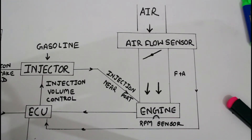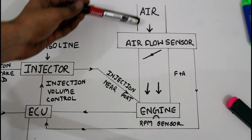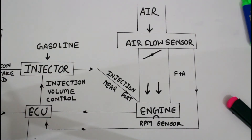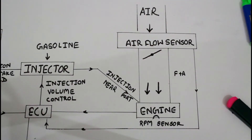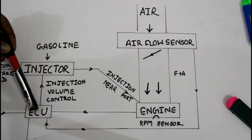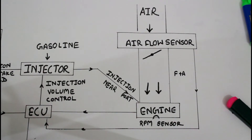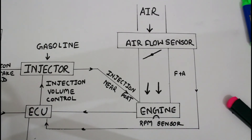This is called air mass metering or air flow metering. As air enters the intake manifold, the air flow sensor measures the amount of air and sends the information to the ECU. Similarly, the speed sensor sends information about the speed of the engine to the ECU. The ECU processes the information received and sends appropriate commands to the injector to regulate the amount of gasoline supply for injection.